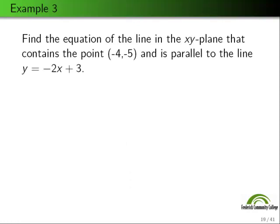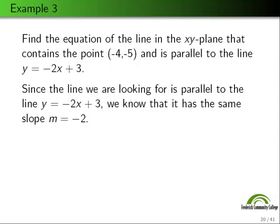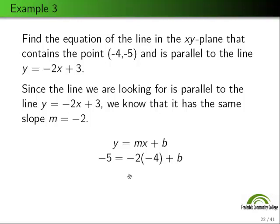The third example: find the equation of the line in the xy plane that contains the point (-4, -5) and is parallel to the line y equals negative 2x plus 3. Parallel lines have the same slope, so m equals negative 2. With slope and point in hand, we use y equals mx plus b: plugging in m equals negative 2, x equals negative 4, and y equals negative 5, we get b equals negative 5 minus (negative 2 times negative 4), which is negative 5 minus 8, so b equals negative 13. Therefore the equation is y equals negative 2x minus 13.